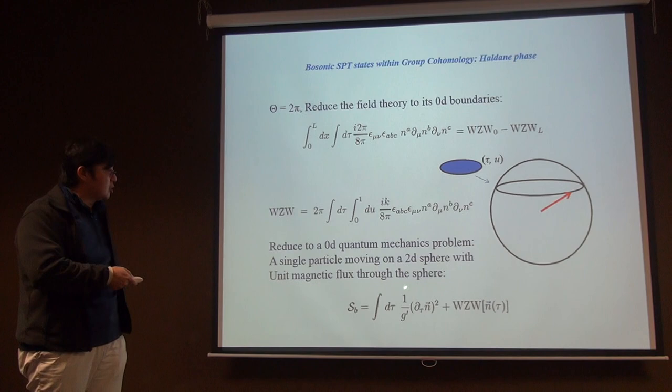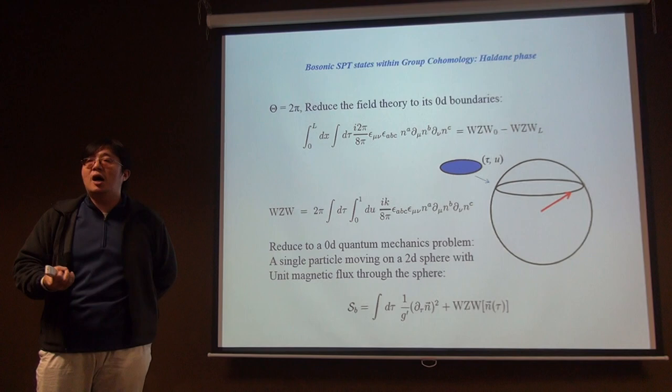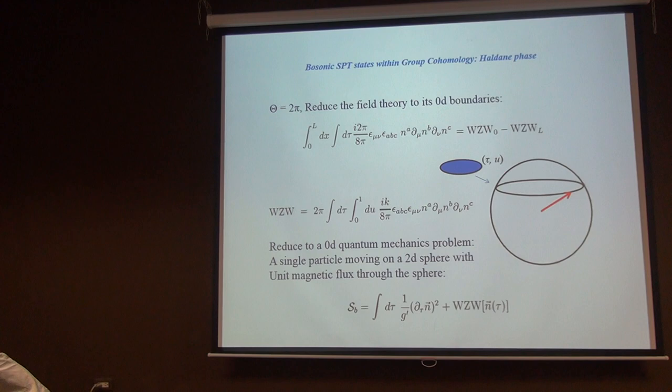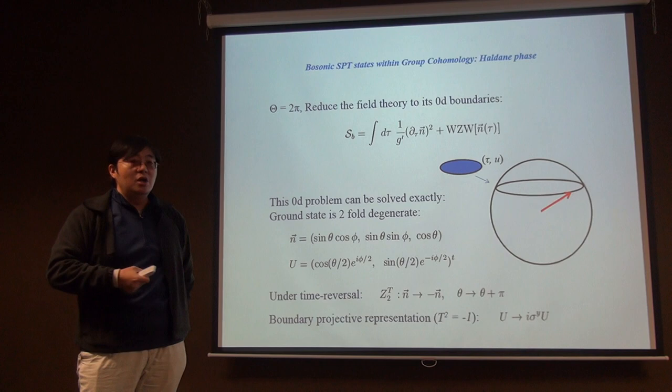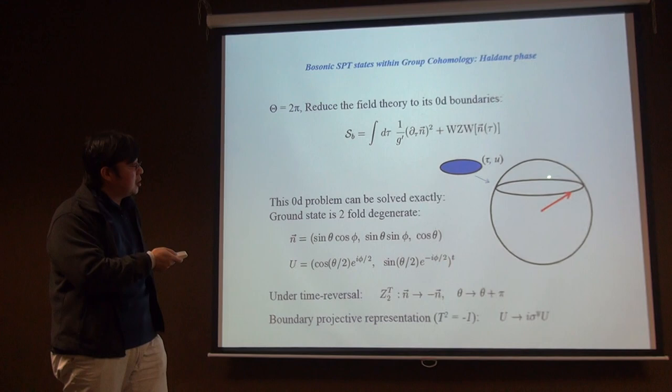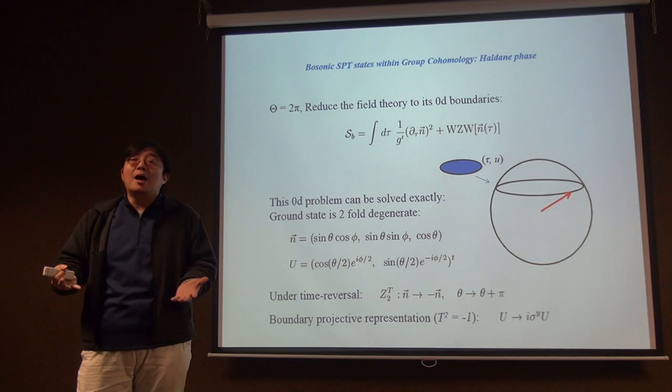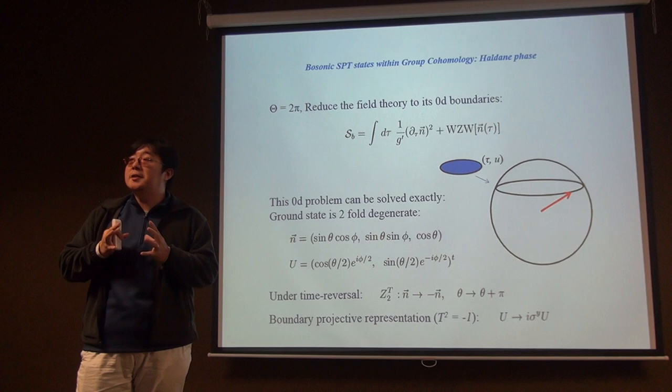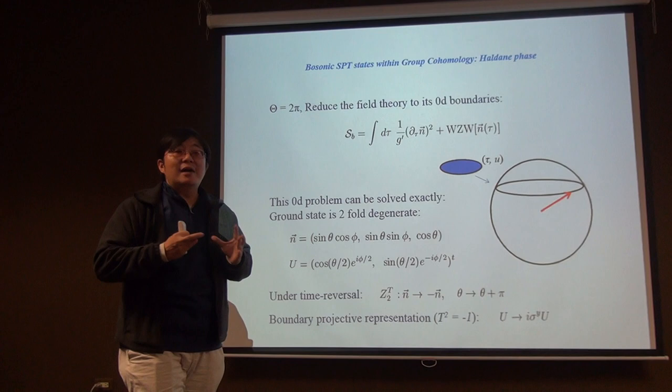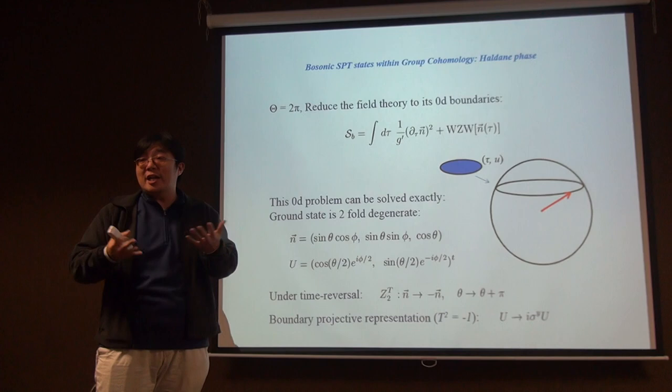The zero-dimensional boundary acquires a WZW term due to the bulk theta term. This reduces the bulk theory to a 0+1D quantum mechanics problem on the boundary: a single particle moving on a two-dimensional sphere with 2π flux through it. This is a Landau-level problem on a sphere. With 2π flux on a sphere, the ground state is two-fold degenerate — precisely the doublet expected at the Haldane phase boundary. This is an exactly solvable single-particle quantum mechanics problem.